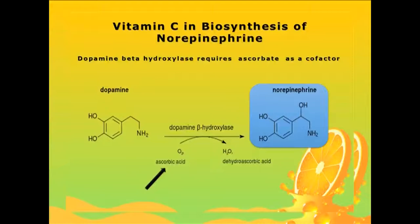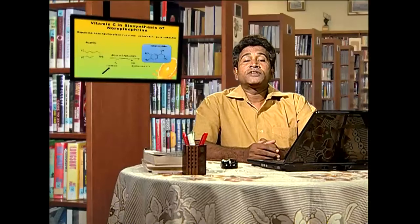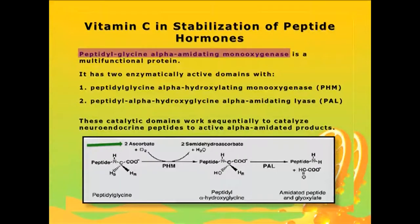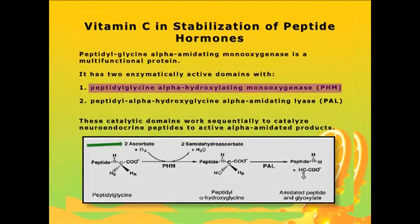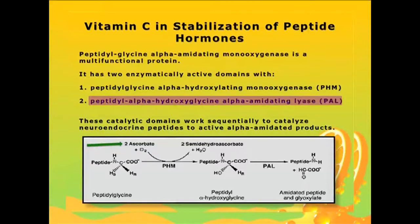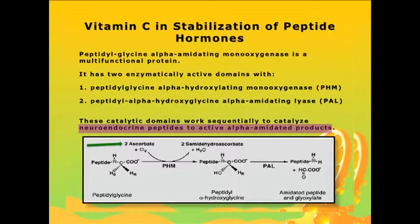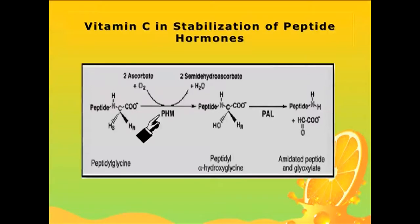Vitamin C is also an important cofactor for the biosynthetic pathway of norepinephrine, a neurotransmitter. Norepinephrine is synthesized from dopamine by the action of the enzyme dopamine-beta-hydroxylase, which also requires ascorbic acid as a cofactor in the presence of oxygen. Vitamin C is said to stabilize several neuropeptide hormones. The enzyme peptidylglycine alpha-amidating monooxygenase is a multifunctional protein with two enzymatically active domains: the peptidylglycine alpha-hydroxylating monooxygenase (PHM) and peptidyl-alpha-hydroxyglycine alpha-amidating lyase (PAL). These two catalytic domains work sequentially to catalyze neuroendocrine peptides to their activated alpha-amidated products, requiring two ascorbic acid molecules for the action of PHM.